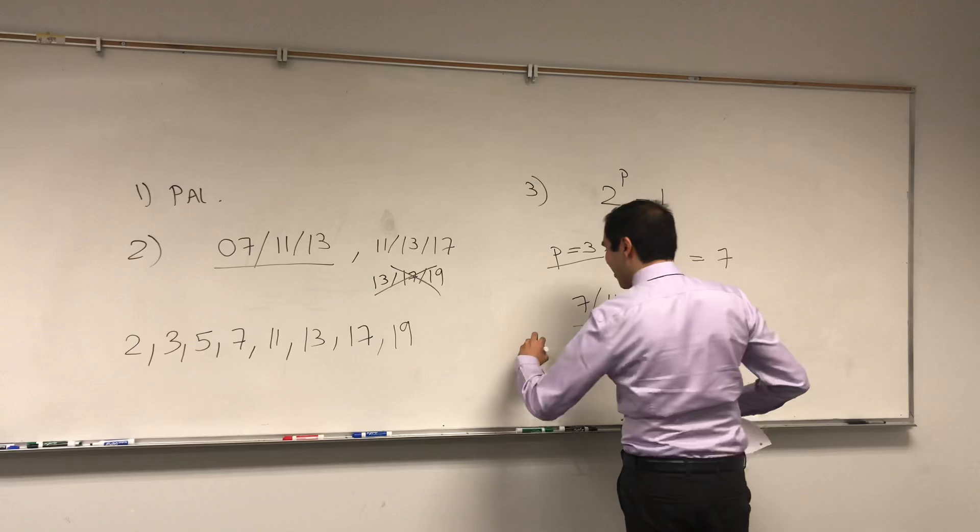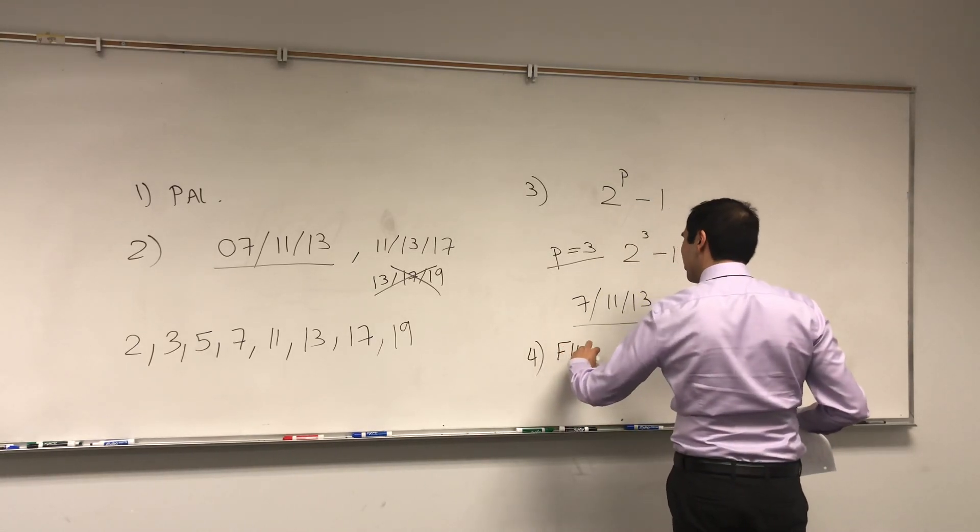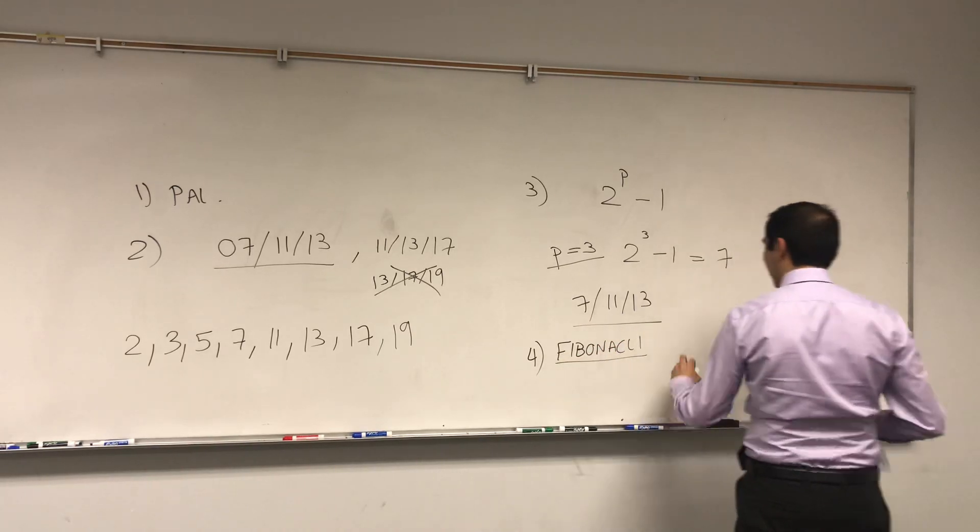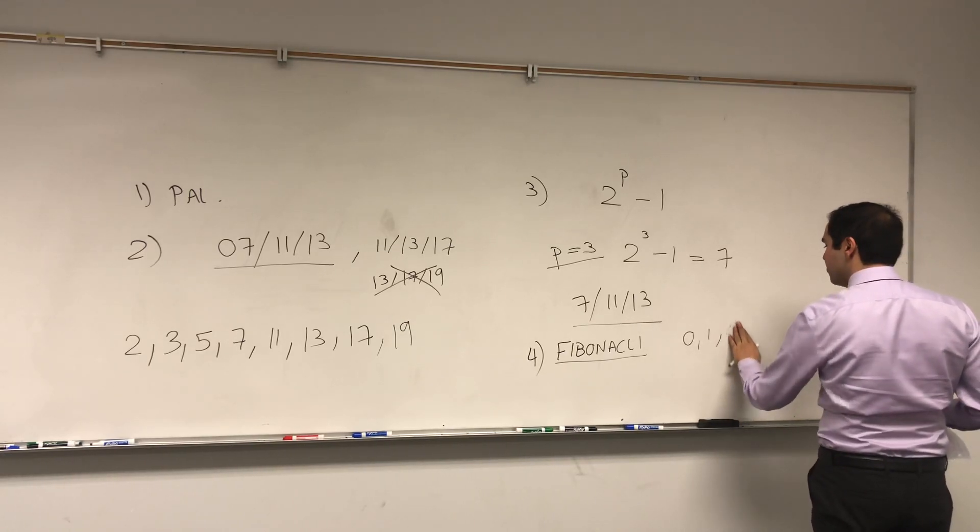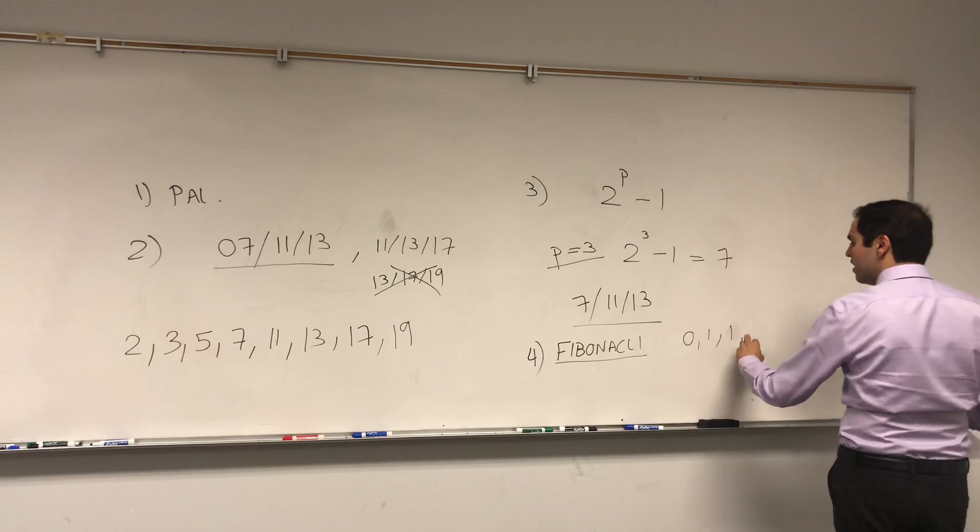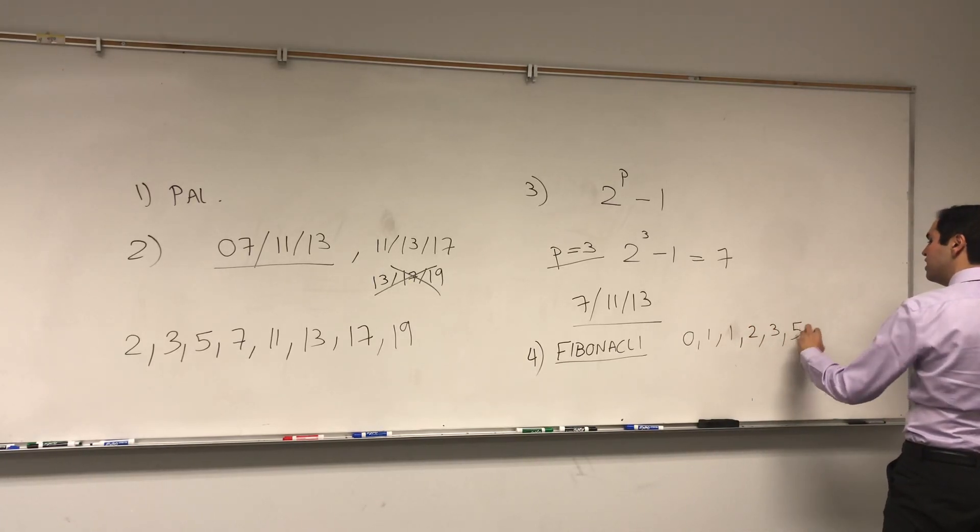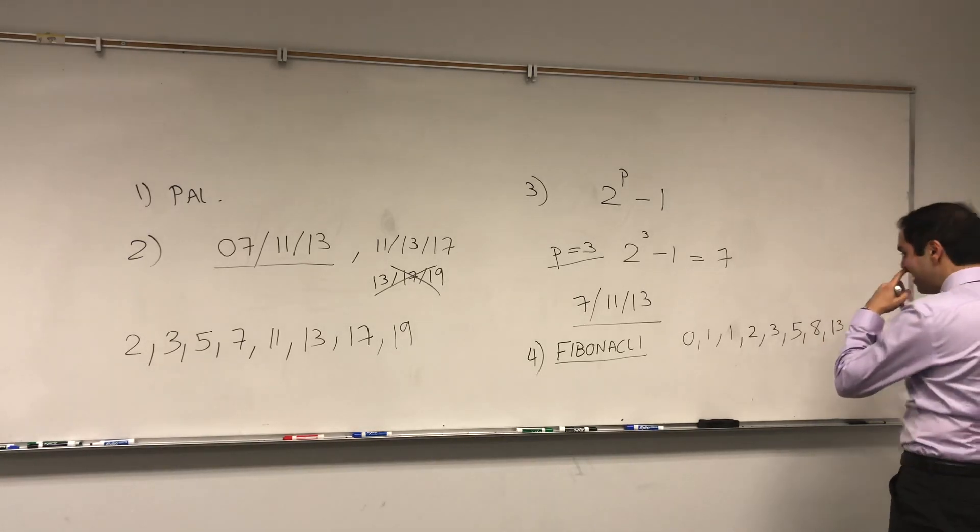All right, and the next one, if you like bunnies, that's a very nice sequence too, namely the Fibonacci sequence, which starts with 0 and then 1. And the next term is just the sum of the previous ones. So 1, and then 1 plus 1, which is 2, 2 plus 1, which is 3, 5, 8, 13, 21, etc.